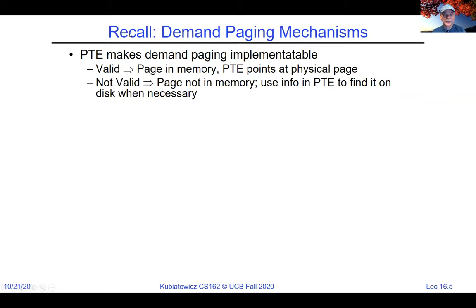Let's talk about page replacement policies. Why do we care? The replacement is always an issue with caches, but it's particularly important for pages because the cost of being wrong is really high — going to disk costs a million-plus instructions. If you're wrong in a hardware cache and have to go to DRAM, the miss time is not that high relative to other things, and random replacement works pretty well. But for disk, random is really not great — there are so many better things you could do in terms of picking a page to throw out.